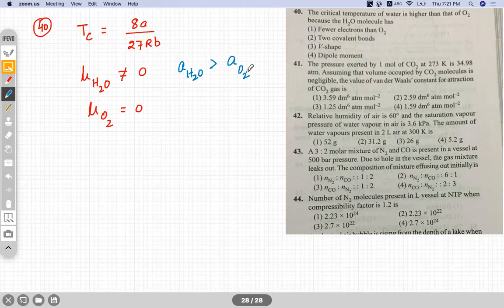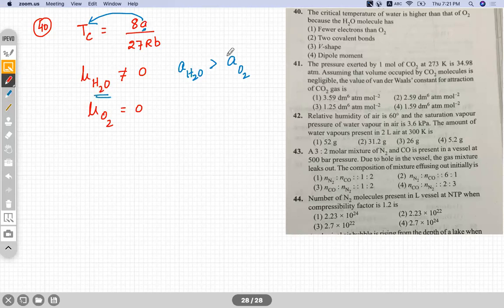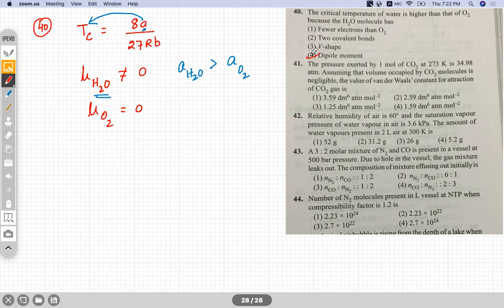And it is given in the question that the critical temperature of water is higher than to that of O2. Obviously, if A is more for H2O, then its critical temperature will also be more. That is why, because water is polar. Polar means it has dipole moment. Hence, the answer for question number 40 is D.